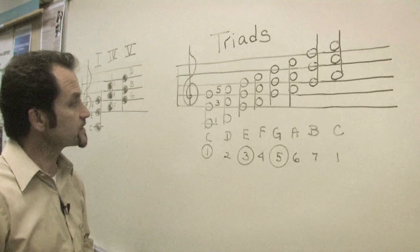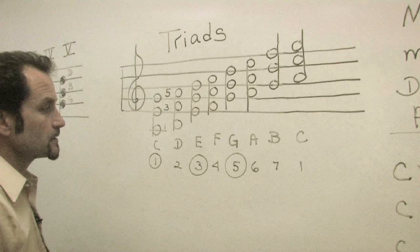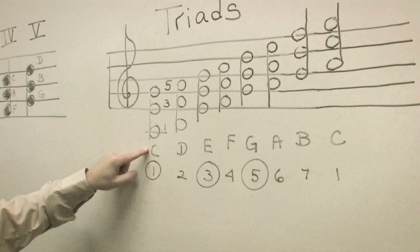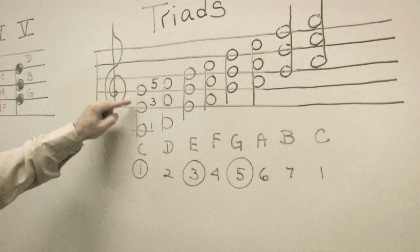For instance, if we are in the key of C major and I've written out a C major scale, the first chord of the C major scale of course will be C. The spelling of a C chord will be C, E, and G. C, E, and G, every other one.